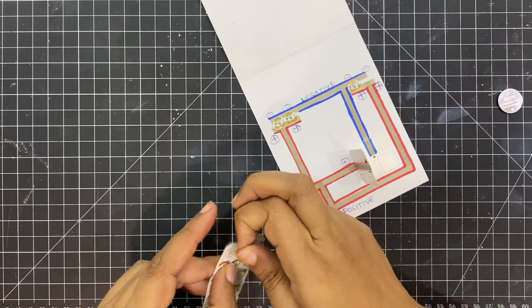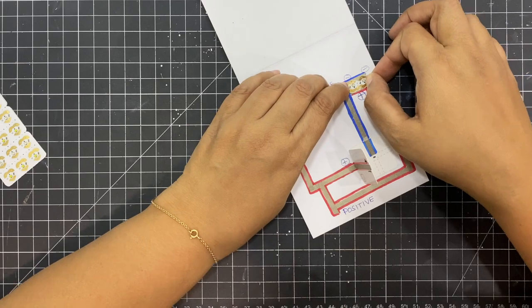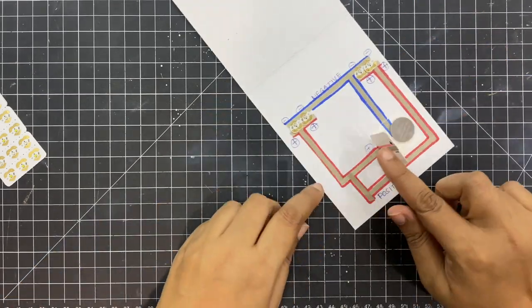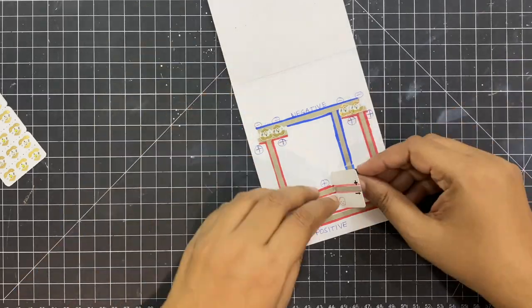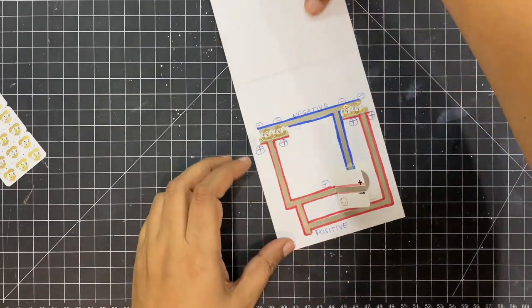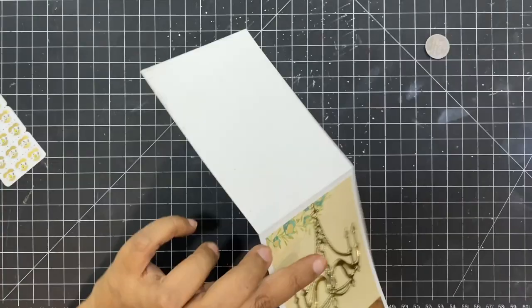Stick all your conductive tape and the lights very firmly. It's always a good idea to check them and then just go ahead and press everything very well. This is the front of the card.